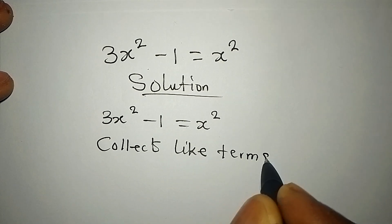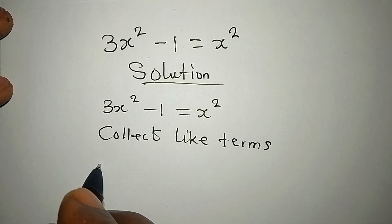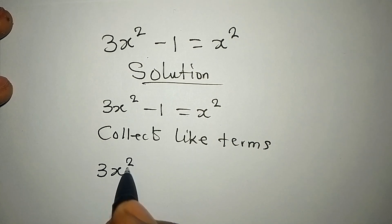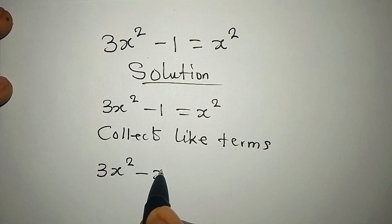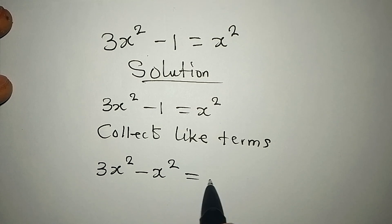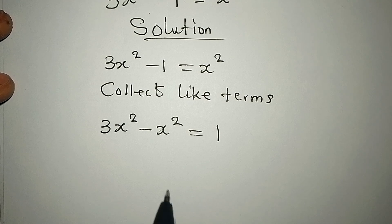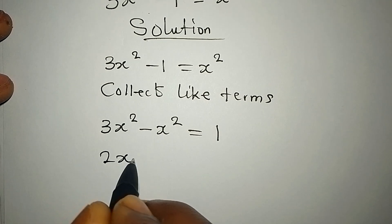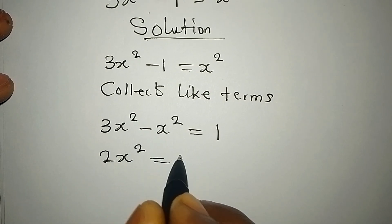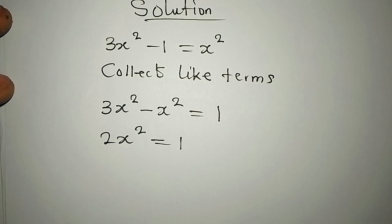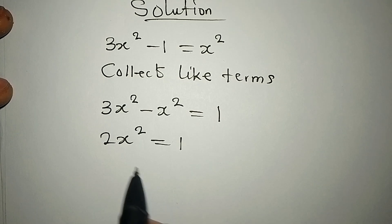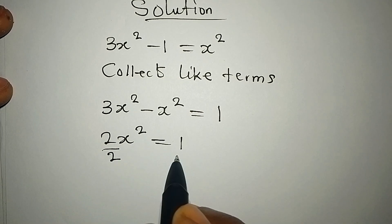So we have 3x² - x² = 1. Now 3x² - x² will give us 2x², and this is equal to 1. Now divide both sides by 2 so that x² will be alone.